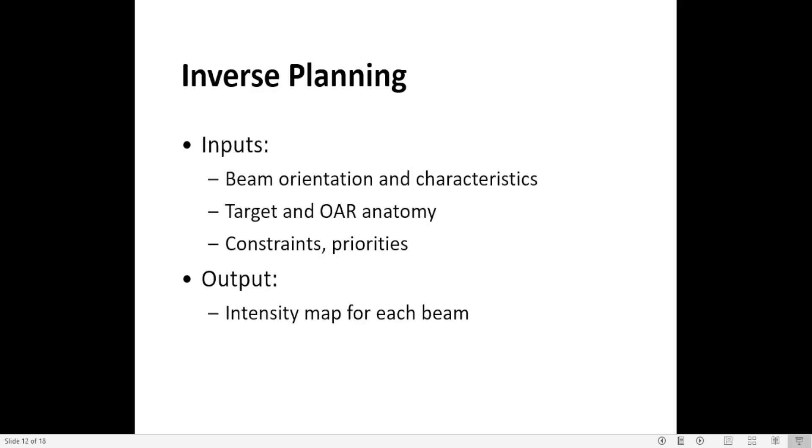Inverse planning inputs are beam orientation and characteristics, targets and organs at risk anatomy, constraints and priorities. The constraints are the goals that we have for target like minimum and max dose, for organs at risk, max dose, mean dose. And the priority tells the optimizer to assign weights to each criteria, to each constraint in the cost function.